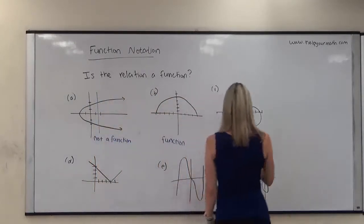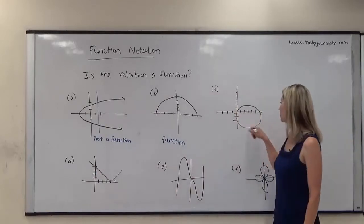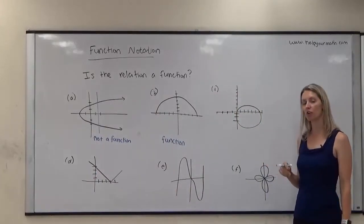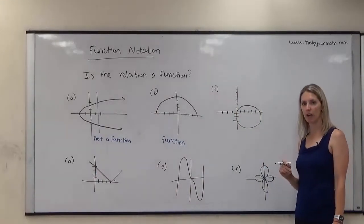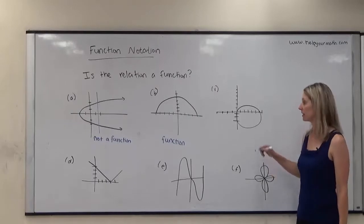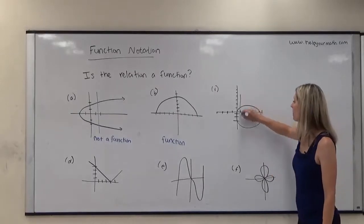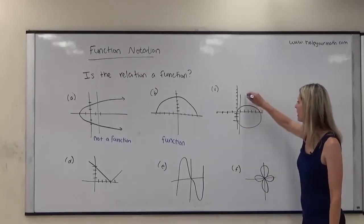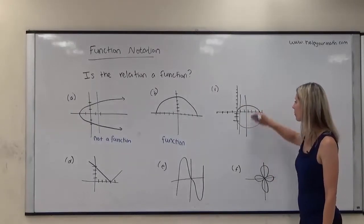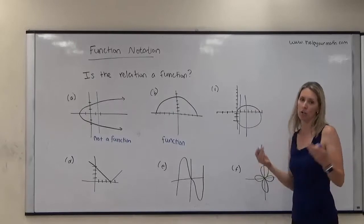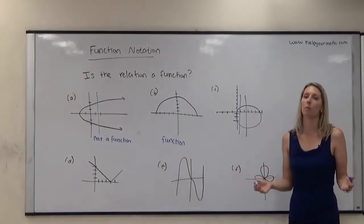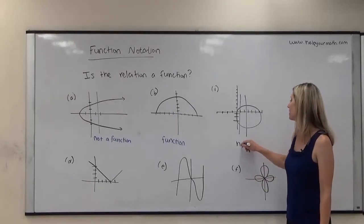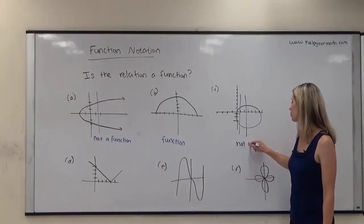In letter C, here's my graph — is there someplace if I draw a vertical line it's going to hit the graph more than once? A lot of places. If I draw one here it fails the vertical line test, here it fails the vertical line test. It just needs to fail in one place for us to determine that this is not a function.